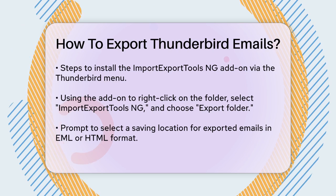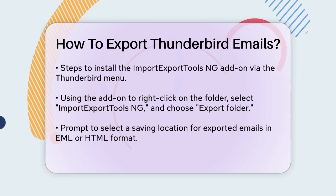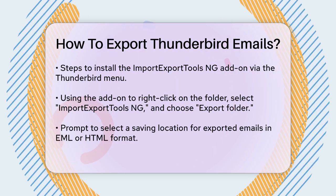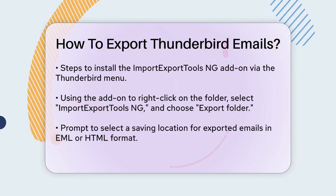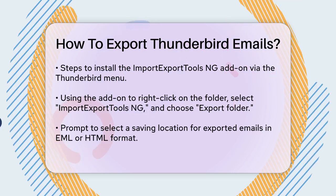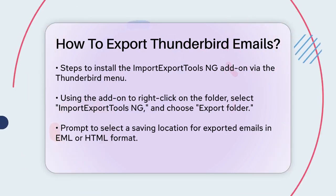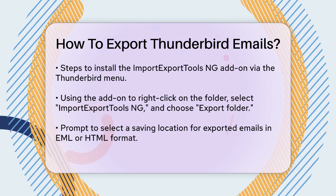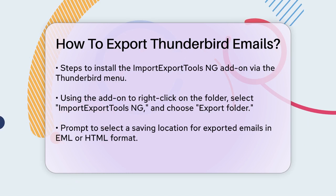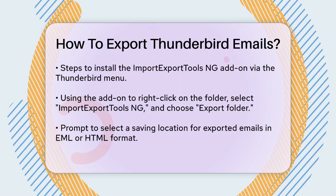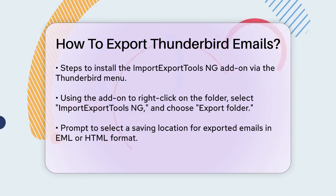Then choose Export Folder and select the format you prefer, such as EML or HTML. You'll be prompted to choose a location to save your exported emails. Select a folder and click Save to start the export process.